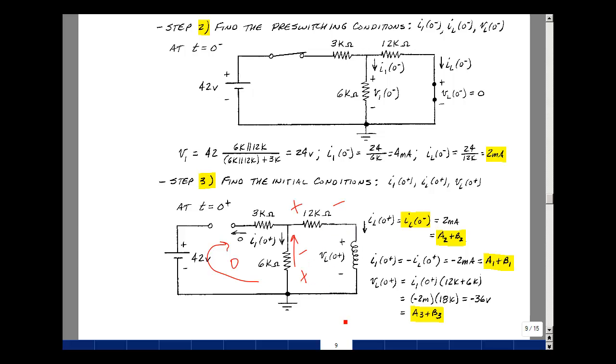We want the opposite sign, so it'll be the negative of that. So minus 2 milliamps times 18k is minus 36 volts, and that's A3 plus B3 times E to the zero. So A3 plus B3. I have two unknowns. I need a second equation.